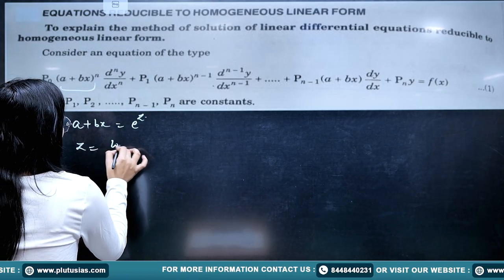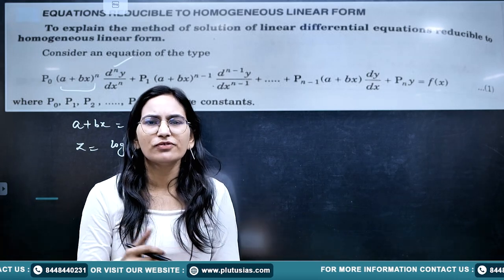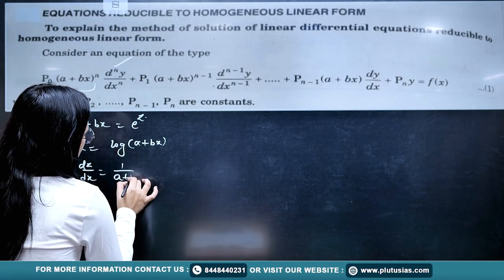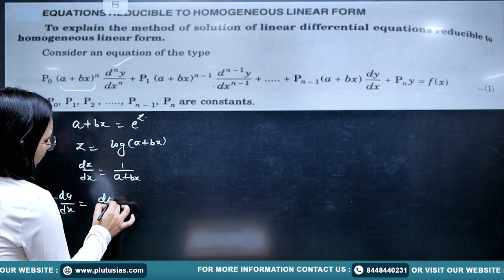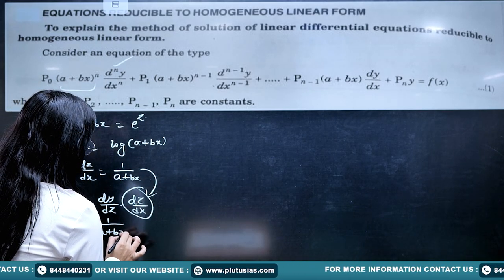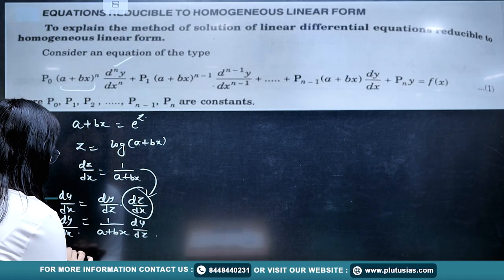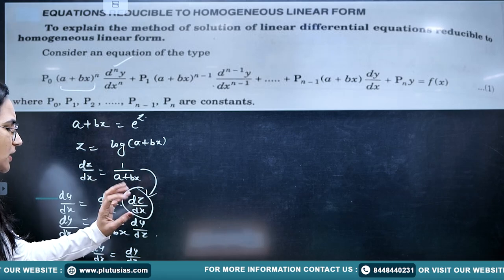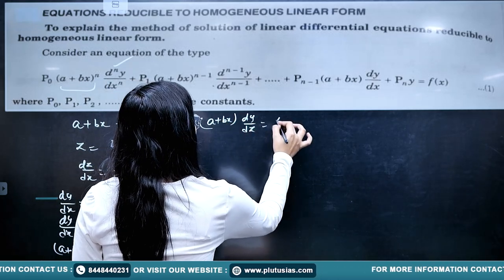With the substitution a+bx = e^z, we get z = log(a+bx). We need to find all the differential operators. Starting with dz/dx: differentiating z = log(a+bx) gives dz/dx = b/(a+bx). Then dy/dx = (dy/dz)·(dz/dx) = (1/(a+bx))·(dy/dz)·b. Multiplying both sides by (a+bx), we get (a+bx)·(dy/dx) = b·(dy/dz). Replacing dy/dz with capital D, this becomes (a+bx)·(dy/dx) = b·Dy.